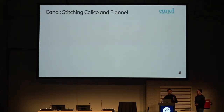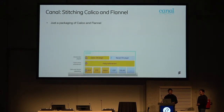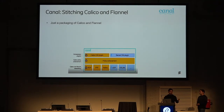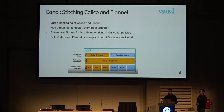We've spoken about Calico and Flannel. What is Canal, and how do both work together? On the Calico website there is a specific option saying 'only with network policy,' which refers to the Canal solution. Canal is just a packaging of Calico and Flannel — it makes use of Calico's network policy and Flannel's VXLAN networking, deployed together via a manifest called Tectonic. Flannel by itself does not have network policy capability, so Canal combines both. Both Calico and Flannel now support Kubernetes API data store and etcd.